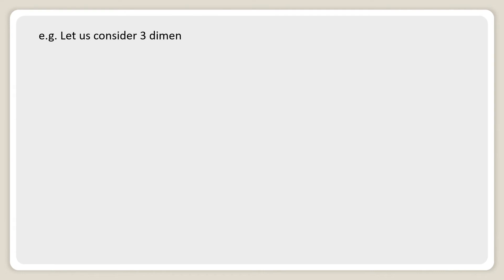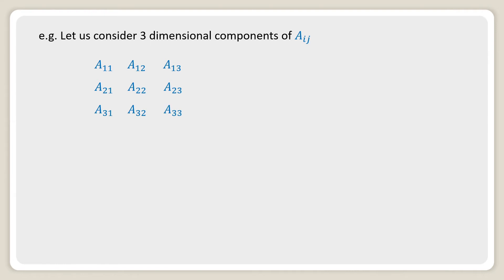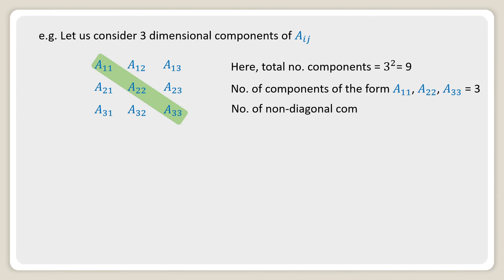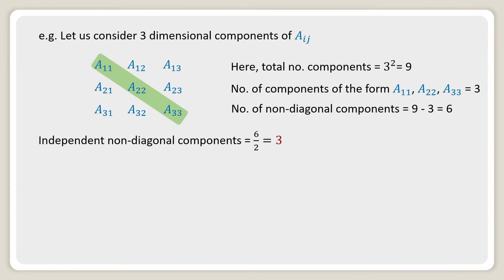For example, consider the three-dimensional components of a_ij: a11, a12, a13, a21, a22, a23, a31, a32, a33. The total number of components equals 3 squared, that is 9. The number of diagonal components a11, a22, a33 equals 3. The number of non-diagonal components equals 9 minus 3, that is 6. The number of independent non-diagonal components equals 6 divided by 2, that is 3.